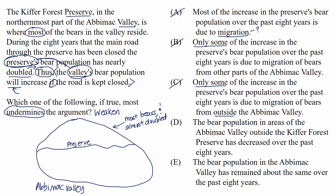Choice D: The bear population in areas of the Abamac Valley outside the Kifer Forest Preserve has decreased over the past eight years. Tempting, but this information by itself doesn't affect the argument. Let's say the bear population in the area outside the preserve decreased, but only by one bear. Well, if the preserve gained 100 bears in the same time, then this choice doesn't hurt the argument. So we're missing information about exactly how much the bear population in the valley decreased in comparison to how much the preserve population increased.